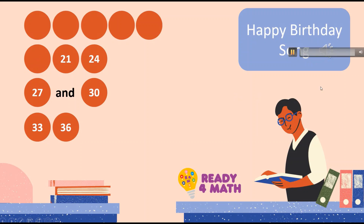Ready? 3, 6, 9, 12, 15, 18, 21, 24, 27, and 30, 33, 36. Wow, that's great! Let's remove one more: 3, 6, 9, 12, 15, 18, 21, 24, 27, and 30. 3, 6, 9, 12, 15, 18, 21, 24, 27, and 30, 33, 36.